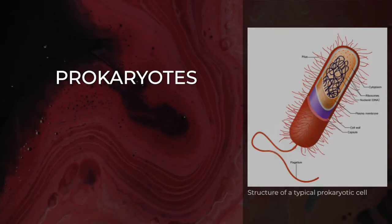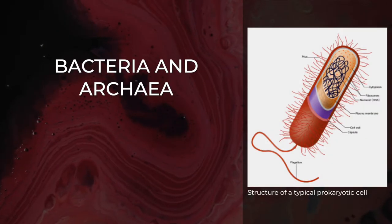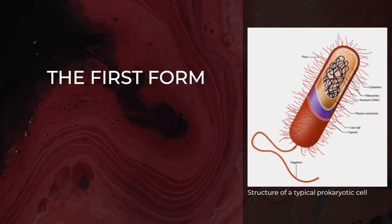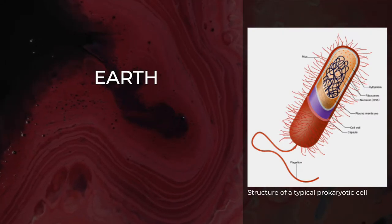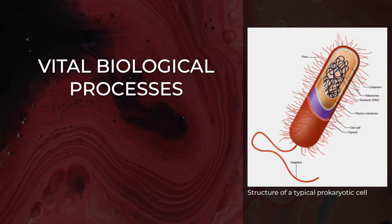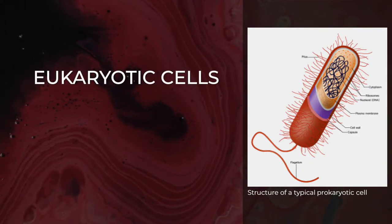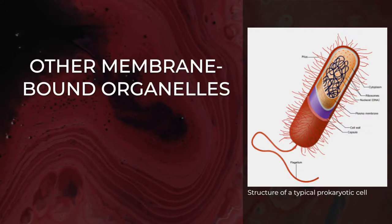Prokaryotes include bacteria and archaea, two of the three domains of life. Prokaryotic cells were the first form of life on Earth, characterized by having vital biological processes including cell signaling. They are simpler and smaller than eukaryotic cells, and lack a nucleus and other membrane-bound organelles.